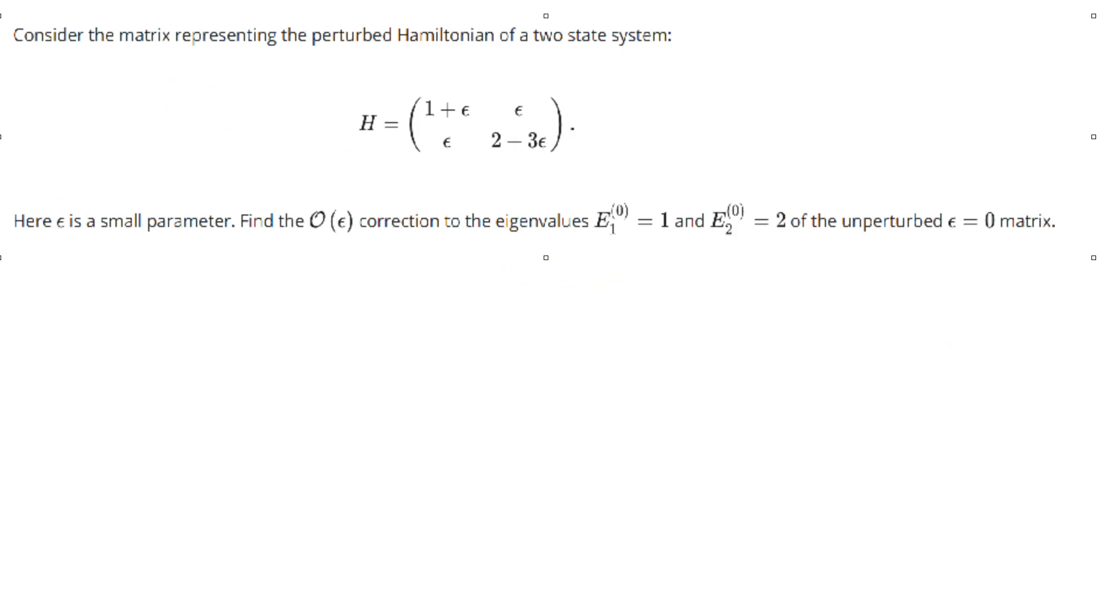Alright, this is the last example we'll do. I promise we'll start moving on to second order and then degenerate perturbation theory after. But I want to do this example because it's actually using matrices. A lot of systems, especially two-state systems, have two-by-two matrices, so we really need to know how to work with these. So without further ado,